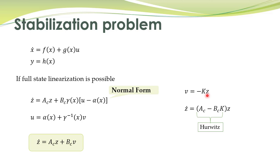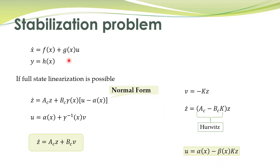The gain matrix K is determined such that the closed-loop matrix is Hurwitz — that is, all eigenvalues are in the left half s-plane. You have studied MATLAB commands and other techniques to find such a K. Therefore the overall control law is given by this expression, which ensures asymptotic stability of the equilibrium point of the nonlinear system.